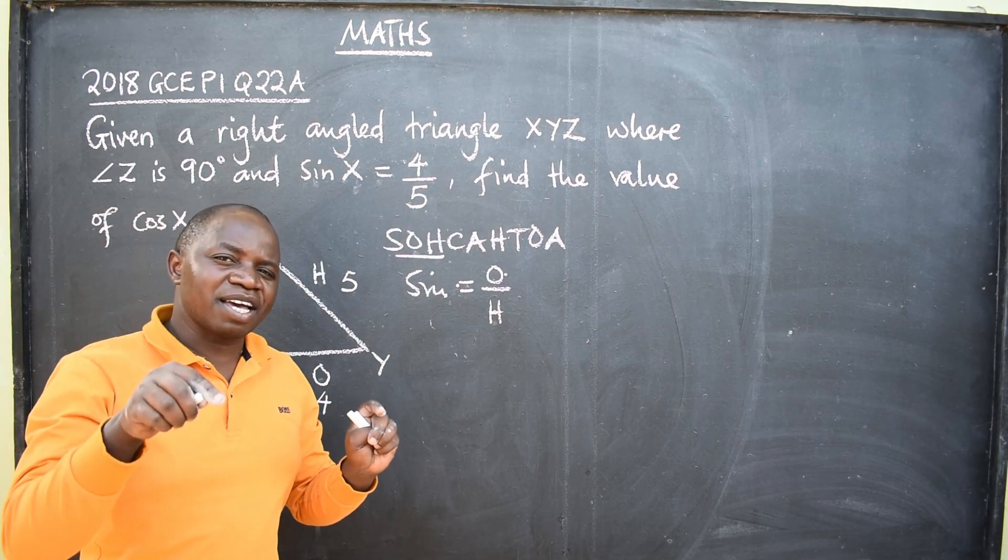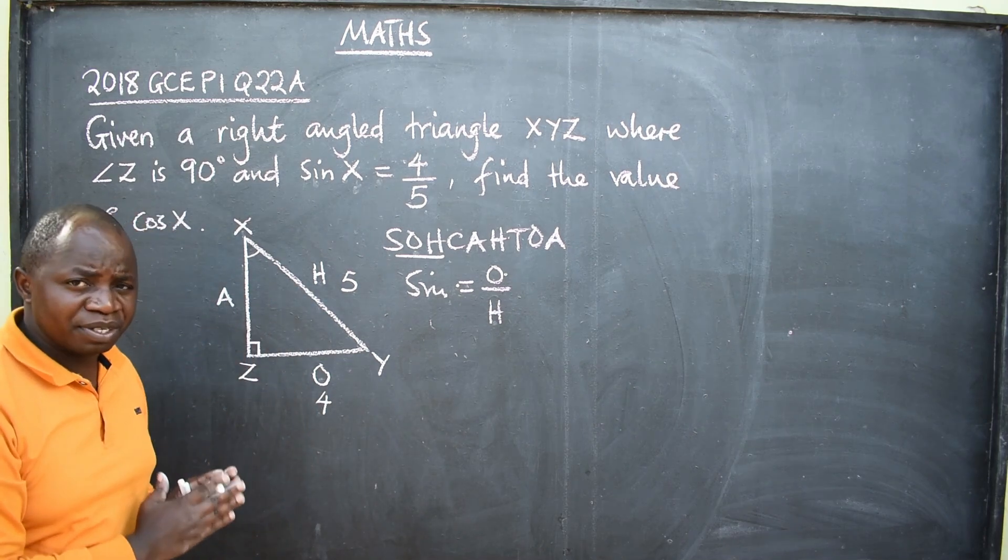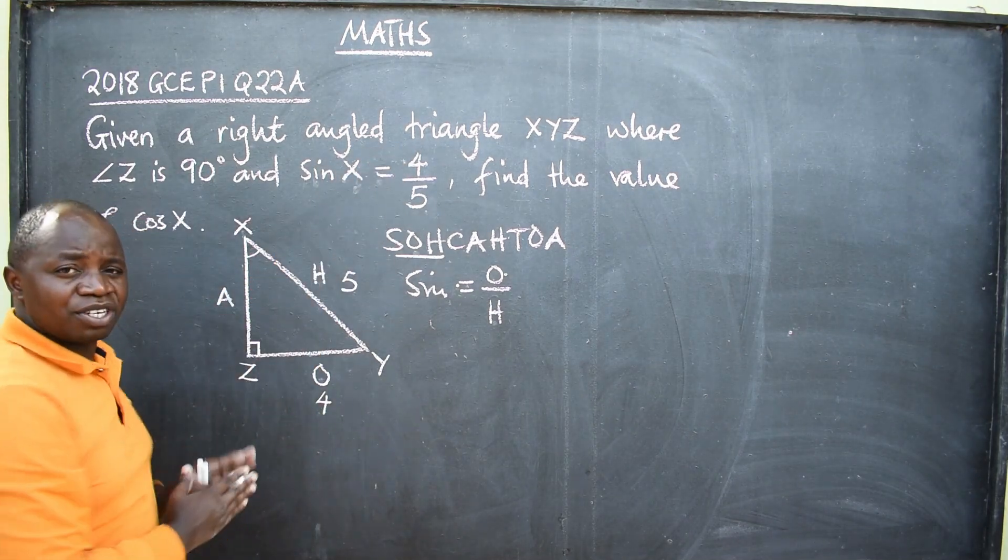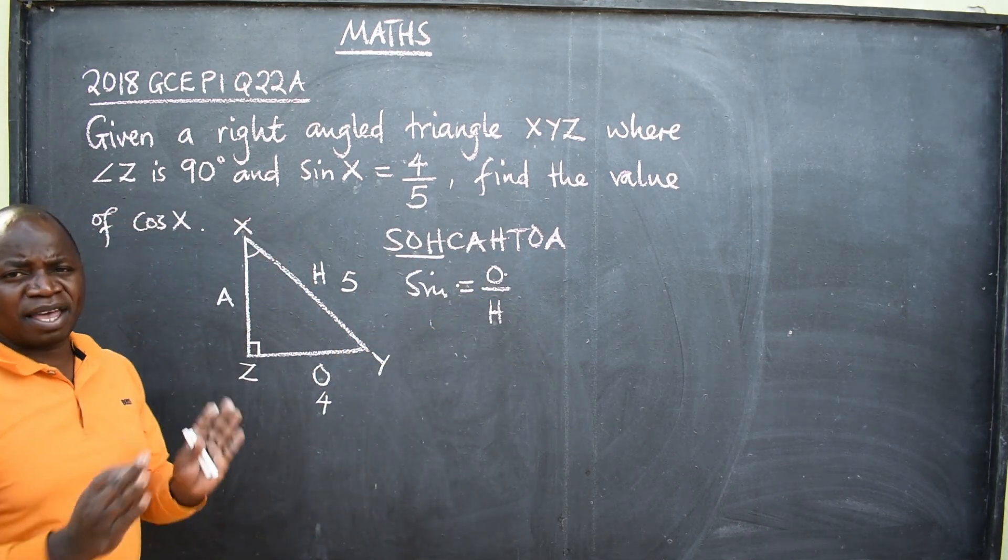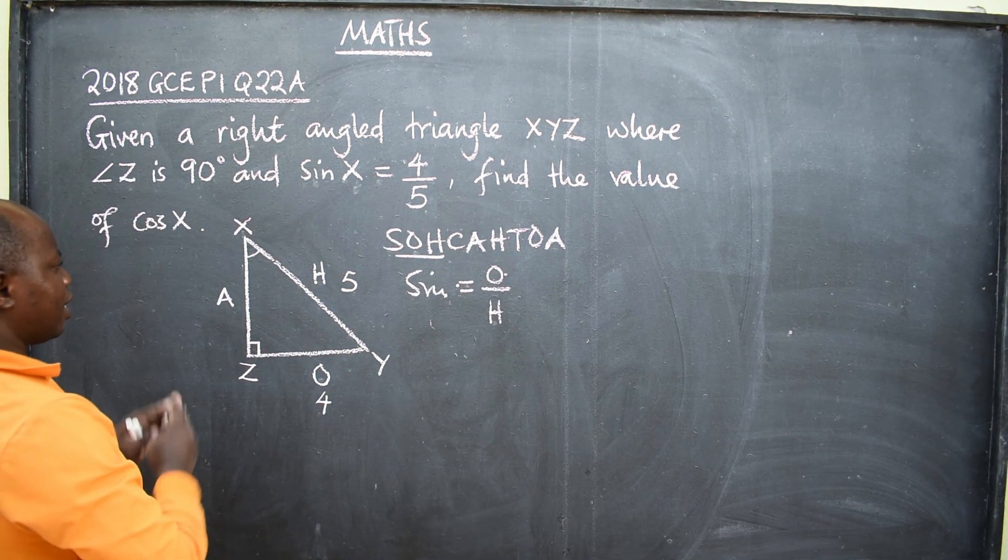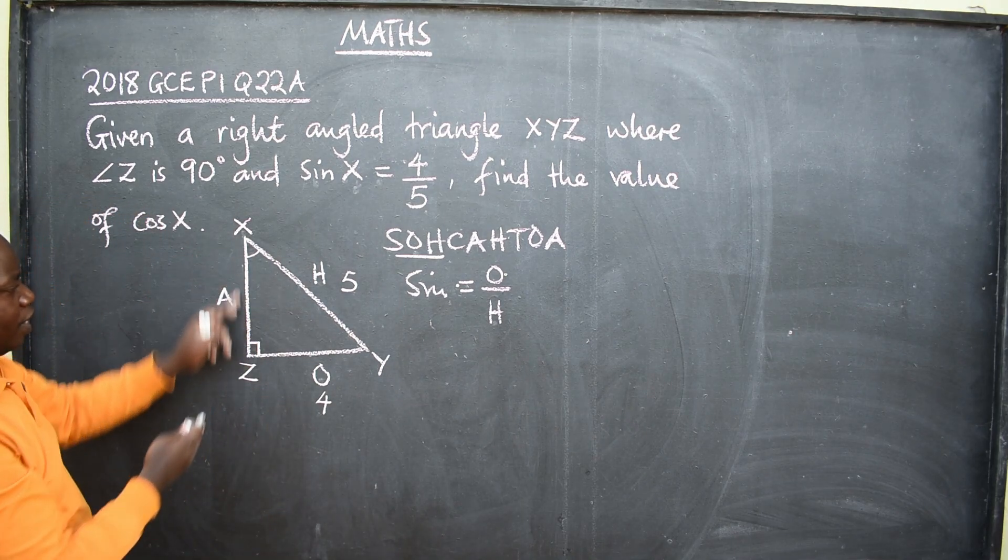Think of the Pythagorean theorem. That is the one that you are going to use. Remember, in a right-angled triangle, we only use two. Which is it, SOHCAHTOA and the Pythagorean theorem. So in this case, it will be Pythagorean theorem that we are going to use to find this length.